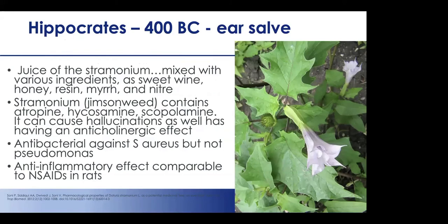Hippocrates also recommended the juice of stramonium mixed with sweet wine, honey, resin, myrrh, and niter. Stramonium (jimsonweed) contains pharmacologically active substances including atropine, hyoscyamine, and scopolamine — it causes hallucinations and has anticholinergic effects. Modern laboratory studies show it has antibiotic activity against staph aureus but not pseudomonas, and anti-inflammatory effect on par with NSAIDs in a rat model, suggesting it may have been effective for some ear infections.